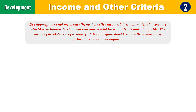In the previous part we studied about development, its meaning and different features, and we concluded that development does not mean only the goal of better income. There are other non-material factors which are linked to human development. A person looks for other goals in their life other than income, and those goals are needed for a quality life and a happy life. Therefore the measure of development of a country, state or region should include these non-material factors as criteria of development.